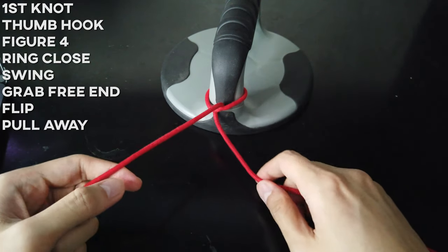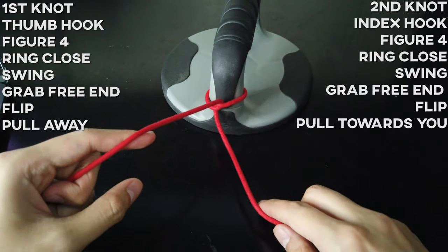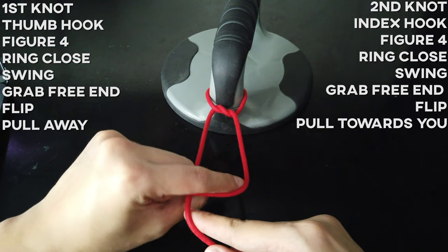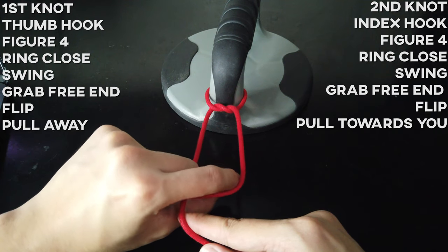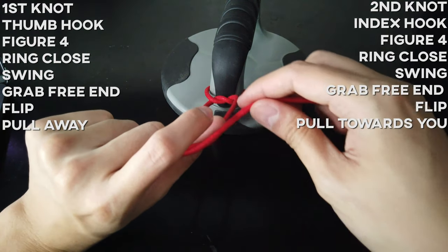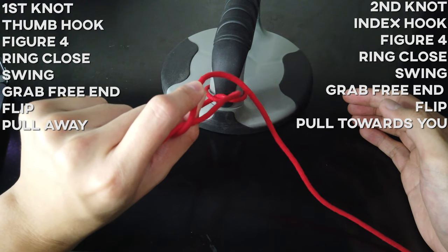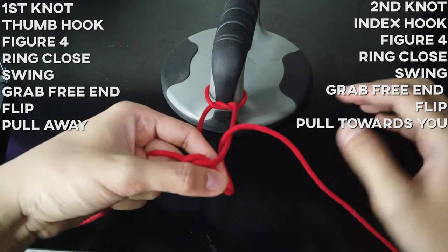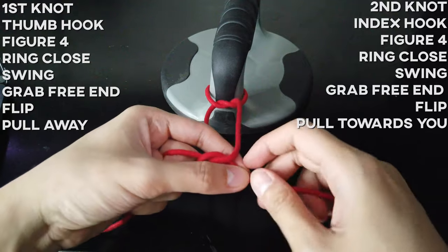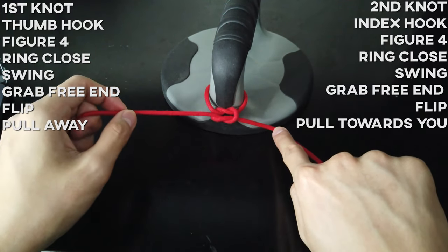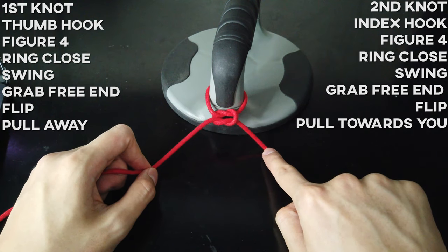And again, grab the free end with your thumb and index finger. And flip to the other side, and this time, you pull towards you. And then, you create another square knot.